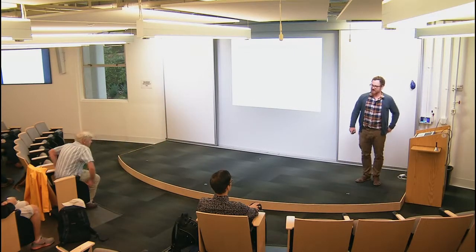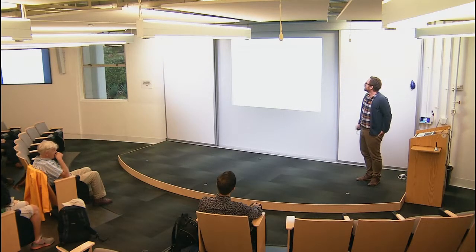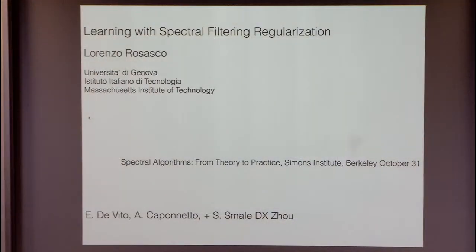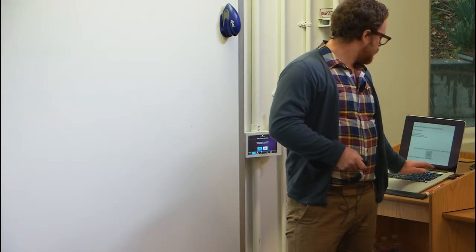Thanks to the organizers for having me here. What I'm going to talk about today: the first part is all about ideas from spectral theory, mostly for learning functions, and in the second part, a look at more geometric ideas. It's going to be part something old, part something new. Some of it is a review of work done in the past that we've started working on again recently. The core idea is a line of work done with Ernesto De Vito and Andrea Caponetto from Italy.